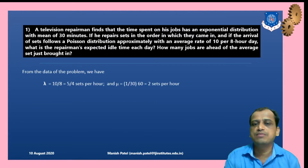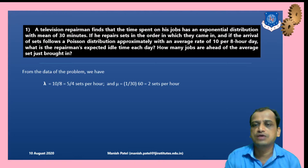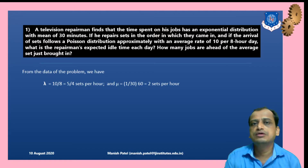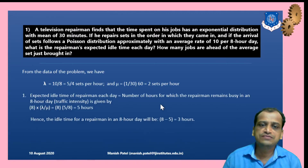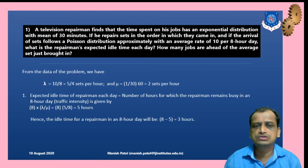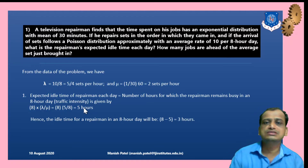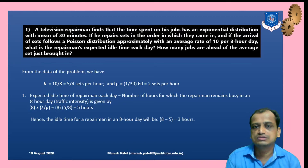What is given: λ = 10/8 = 5/4 sets per hour (converting to hourly rate), and μ = 2 sets per hour (since mean service time is 30 minutes). The traffic intensity ρ = λ/μ = (5/4)/2 = 5/8. Busy time in an 8-hour day = ρ × 8 = 5 hours, so idle time = 8 − 5 = 3 hours.